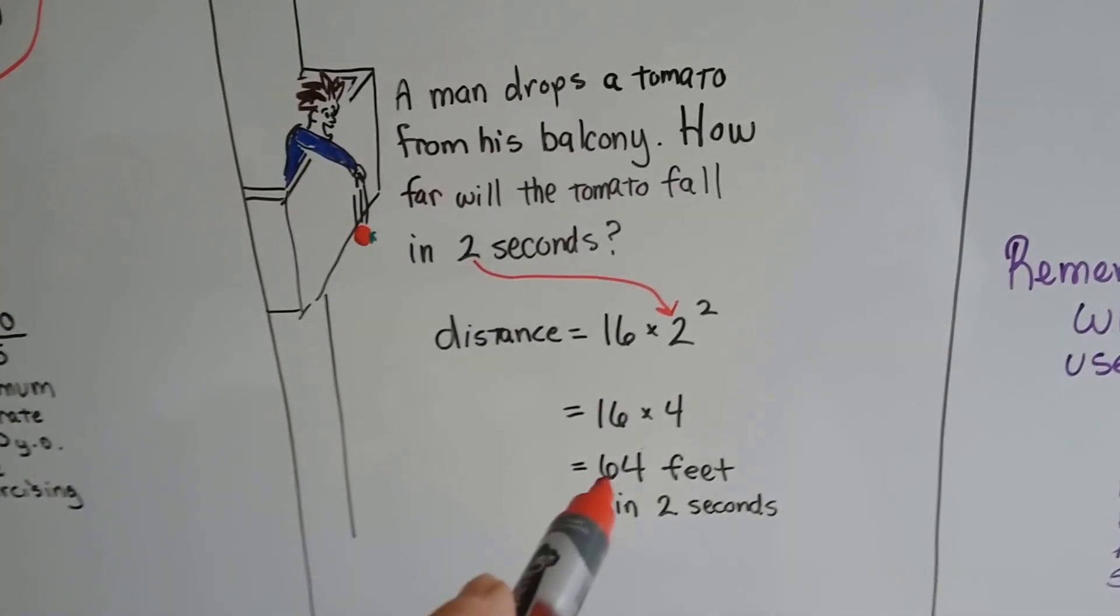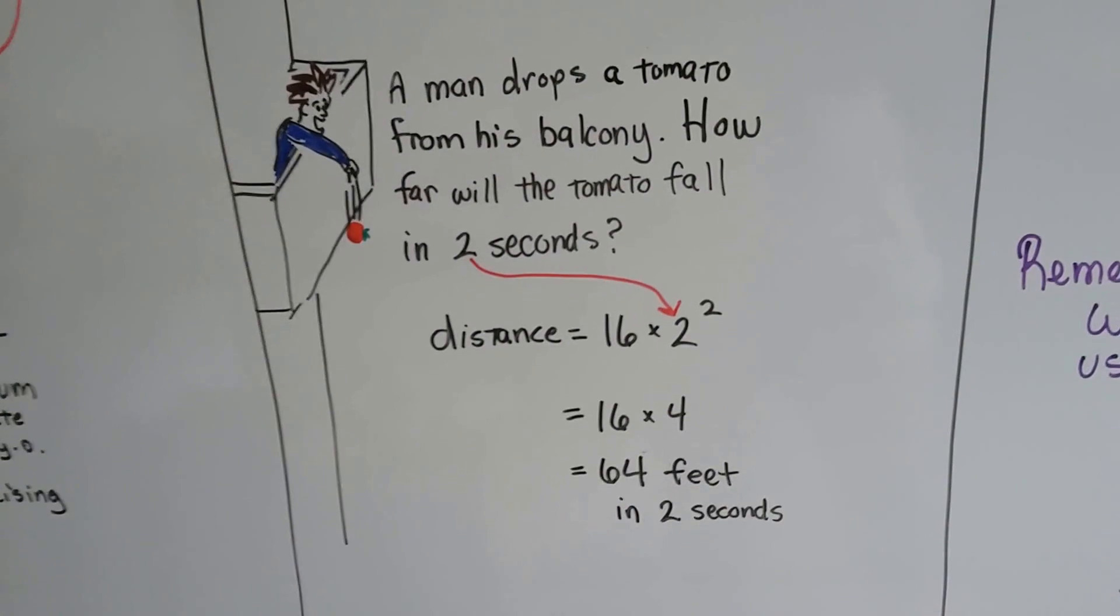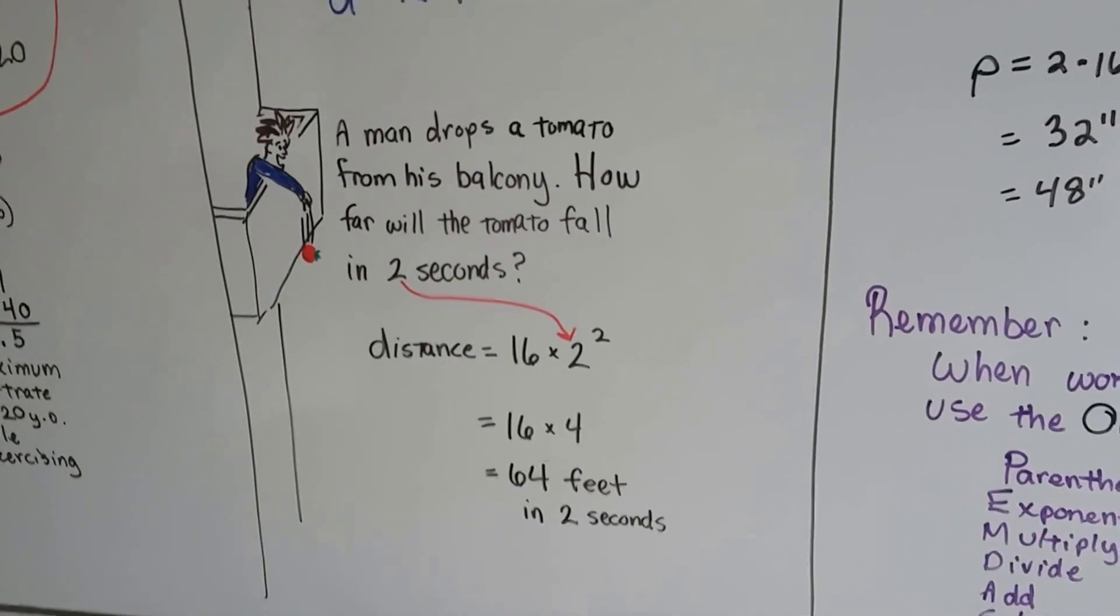We're going to multiply it by 16, and we're going to get 64 feet in 2 seconds. That is one fast tomato, isn't it? 64 feet in 2 seconds. I hope he didn't hit anybody in the head.